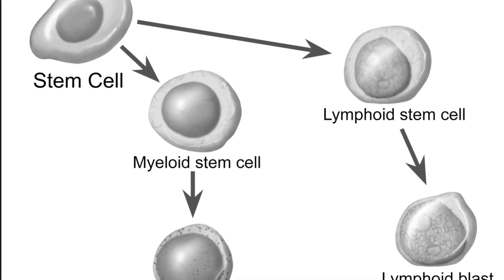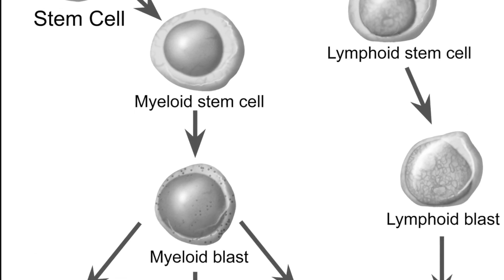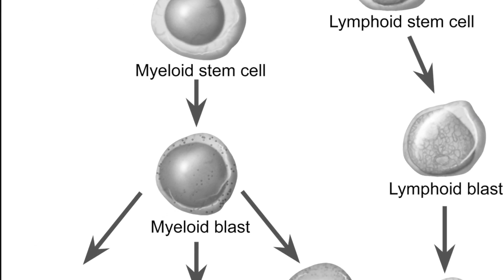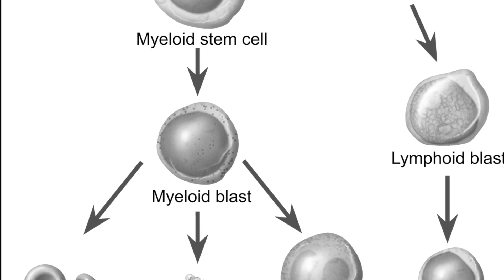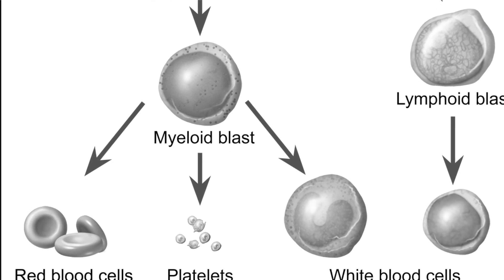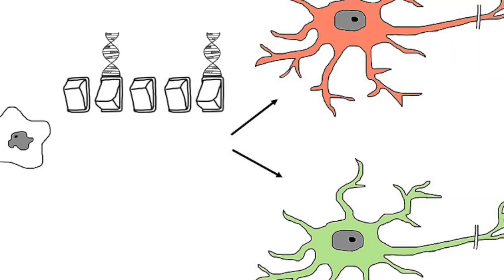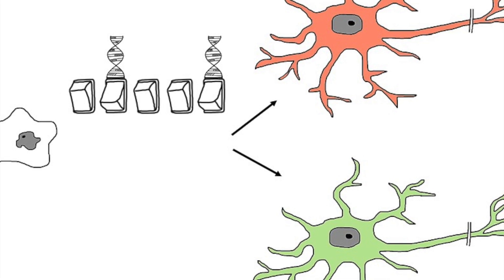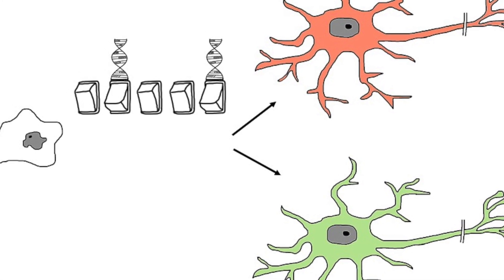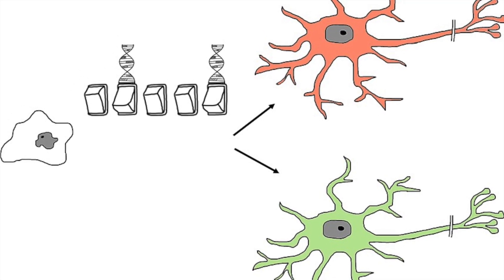These embryonic stem cells could be used to replace faulty old ones. To get cultures of one specific type, scientists control the differentiation by changing the environment, and this can be quite unreliable however.